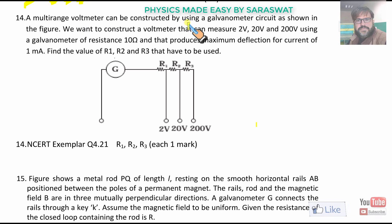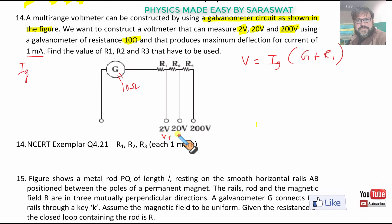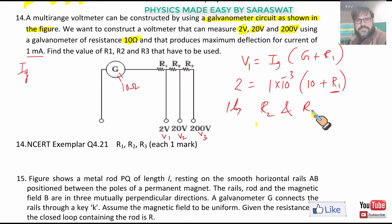Multi-range voltmeter can be constructed by using a galvanometer circuit as shown in the figure. We want to construct a voltmeter that can measure 2 volt, 20 volt and 200 volt using a galvanometer of resistance 10 ohm and that produces a maximum deflection for current 1 milliampere. Find the values of resistance R₁ for 2 volt. The voltage 2 volt can be written as Iɢ(G + R₁). V₁ is 2 = Iɢ(10 + R₁). In this manner, we can calculate R₁, similarly R₂ and R₃.